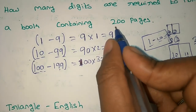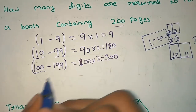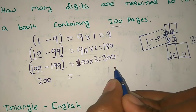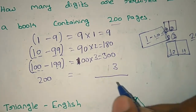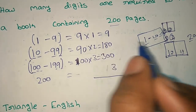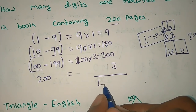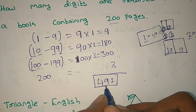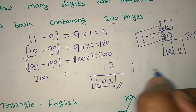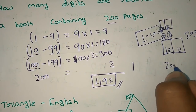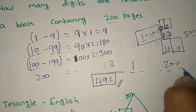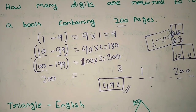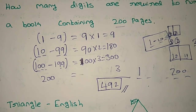Now, turning to 200 pages, each of the 3-digit numbers from 100 to 200 has 3 digits. We have to add these to the previous digits. So: 9 + 180 = 189, then add to 492 total. So the total number of digits required is 492.